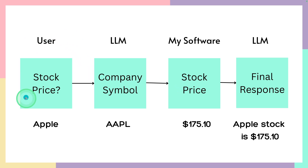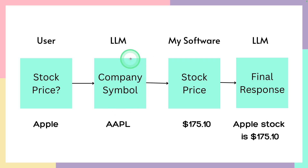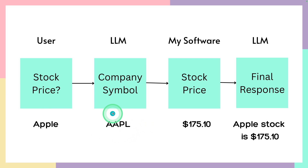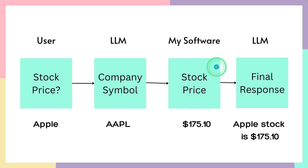Imagine as a user you're asking 'what is the stock price of Apple?' to the large language model. The large language model can't fetch data in real time — that's when we integrate function calling. So the large language model understands the company name and then provides the stock symbol, which is then passed to our internal custom tool that is capable of getting the real-time stock price using that symbol.